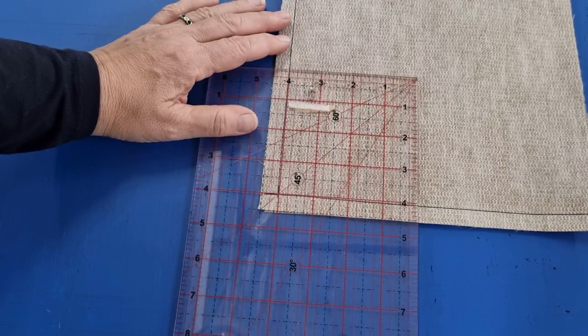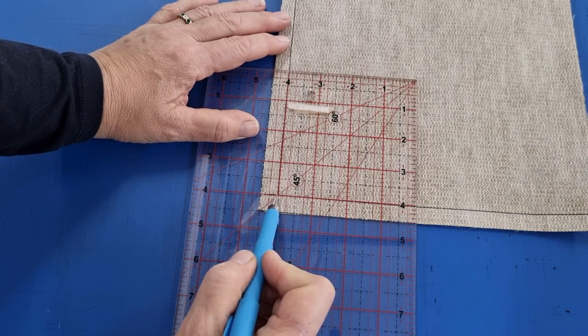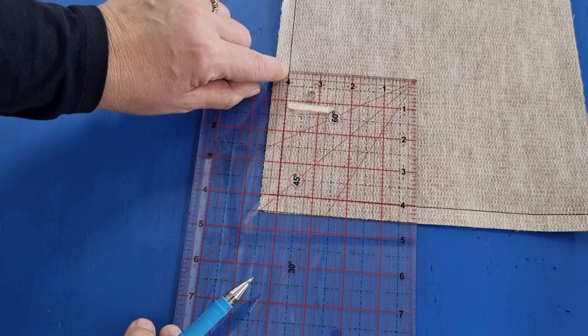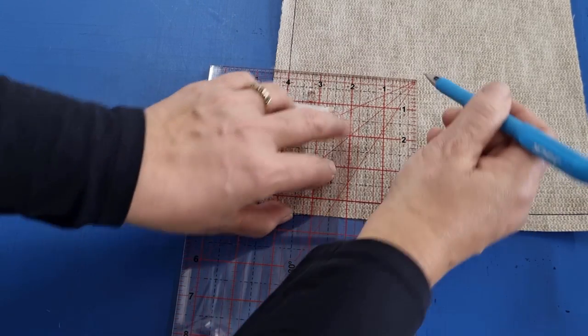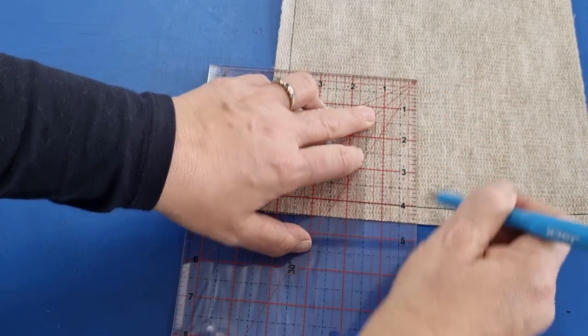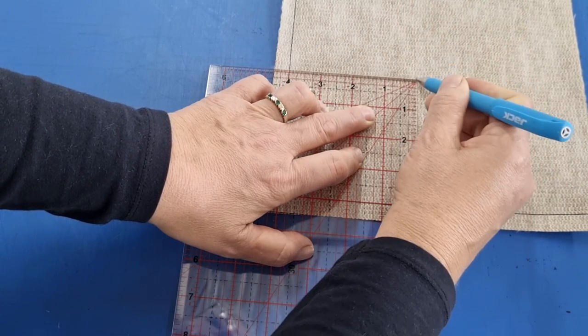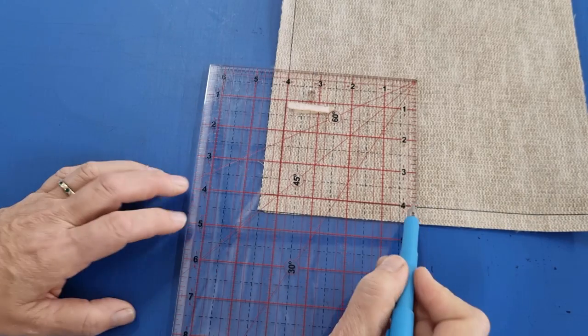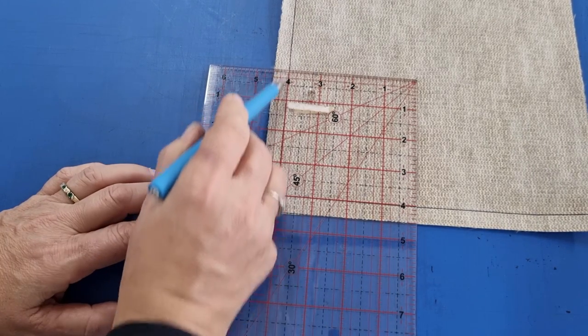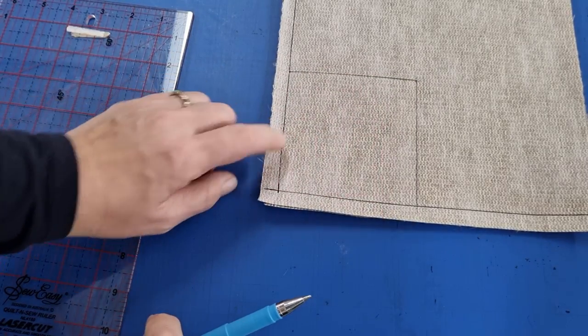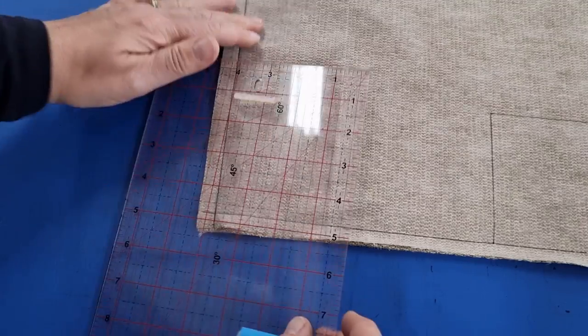If you line up the four inch line across the bottom here and the four inch line on the side here, you can actually draw a square in one go. So your four inch line runs across the stitched line and down the stitched line there. And then we have a beautiful four inch square. Now we will do this on all four sides.